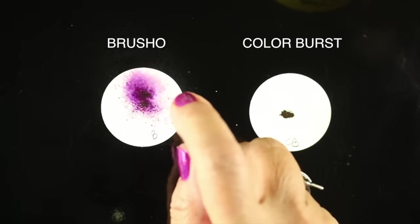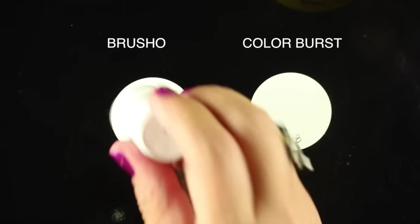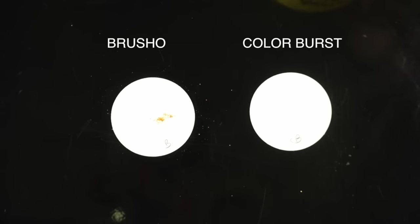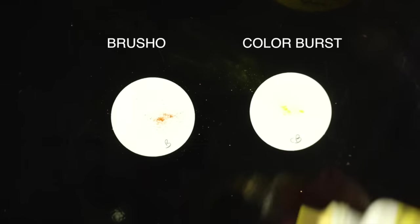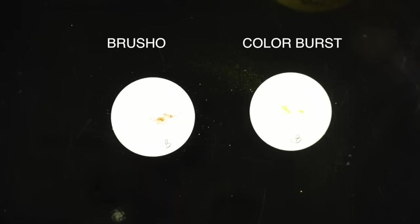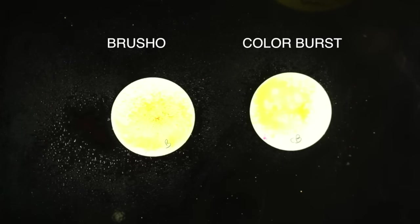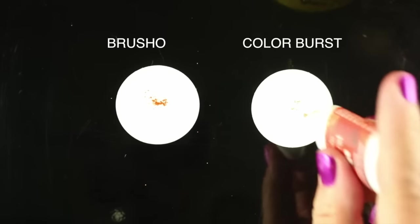And throughout this, as I'm doing my sprinkling, you'll see I'm trying to get about the same amount of color on these so I get a more direct comparison. But it's very difficult when you're shaking powder. This stuff is very much like baby powder. You can see that little cloud coming off of the Colorburst. It's really soft, soft powder that comes out of these.